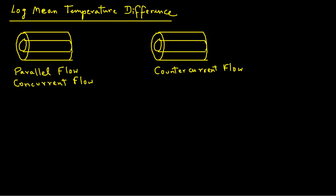I'm going to work through a couple of problems to illustrate how we determine log mean temperature difference. Here we have a tubular heat exchanger, and we will consider first a concurrent flow. It is called concurrent or parallel flow when both fluid streams — the stream inside the inner pipe and also in the annular space — are moving in the same direction.